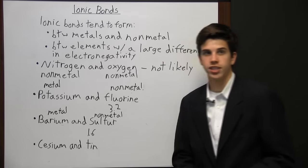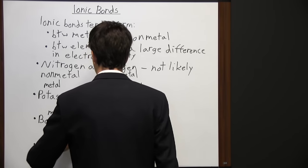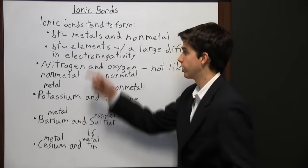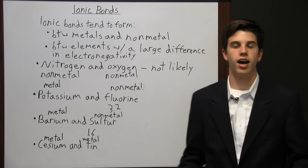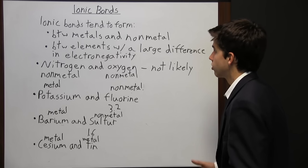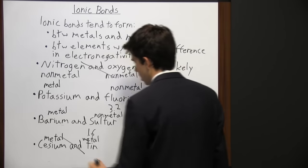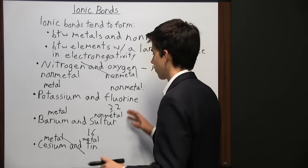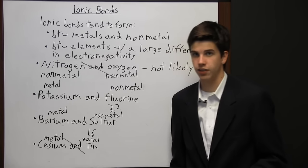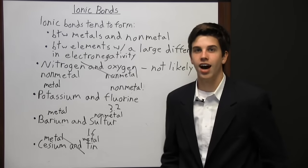Cesium is an alkali metal and tin is also a metal, so here we have two metals interacting with each other — not between a metal and a non-metal — so cesium and tin are not likely to form ionic bonds. When we have a metal and a non-metal, especially with a high electronegativity difference, they're likely to form ionic bonds.